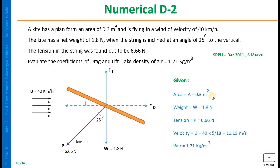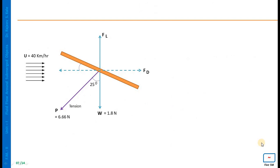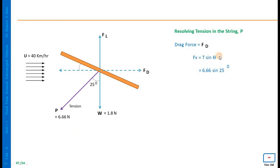Put in the given parameters: area is known, weight is known, tension in the string is known, velocity of flow and density are known. We have to find the coefficient of drag and coefficient of lift. Draw the neat sketch, then resolve the tension in the string into two components Fx and Fy. Here, Fx = T sin θ. Note that in the previous numerical the string angle was given to the horizontal, so Fx = T cos θ, but in this case the angle is given to the vertical, so Fx = T sin θ.